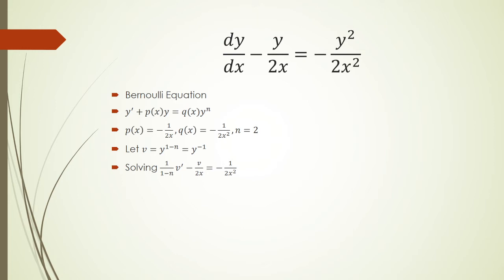For the Bernoulli equation, we're going to solve 1 over 1 minus n times v prime minus v over 2x equals negative 1 over 2x squared. So again, n equals 2, so 1 minus 2 is negative 1. And now I'm just going to make everything positive, so multiply both sides by negative 1.